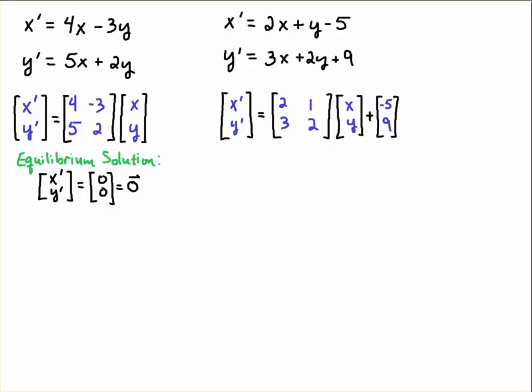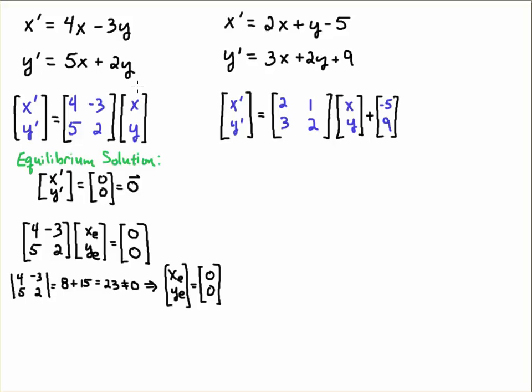Now we're going to determine what the equilibrium solutions are. So we'll get the equilibria of these systems. Remember that the equilibrium solution occurs when the x prime and y prime are each equal to zero. So that means that the column vector x prime y primed would be equal to the zero vector. So that's what we have to do is set up this system here where zero zero is on the left hand side and then that's equal to this matrix equation.